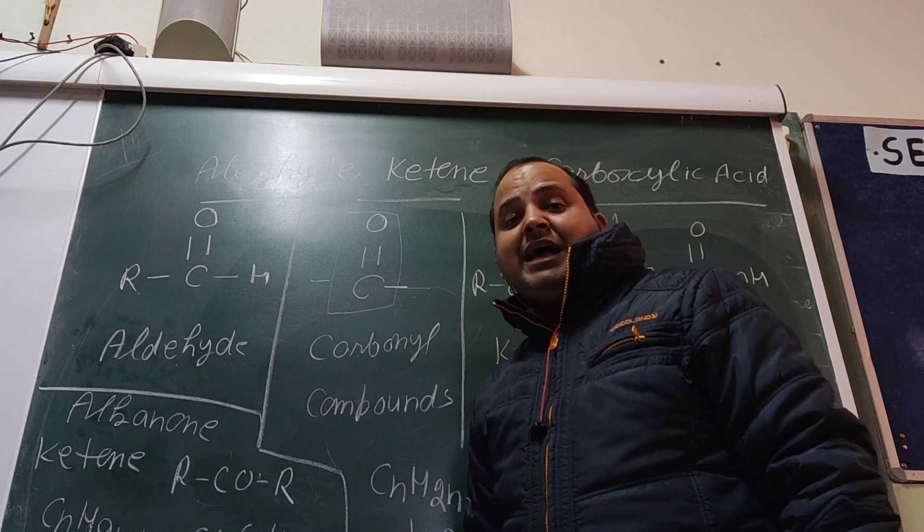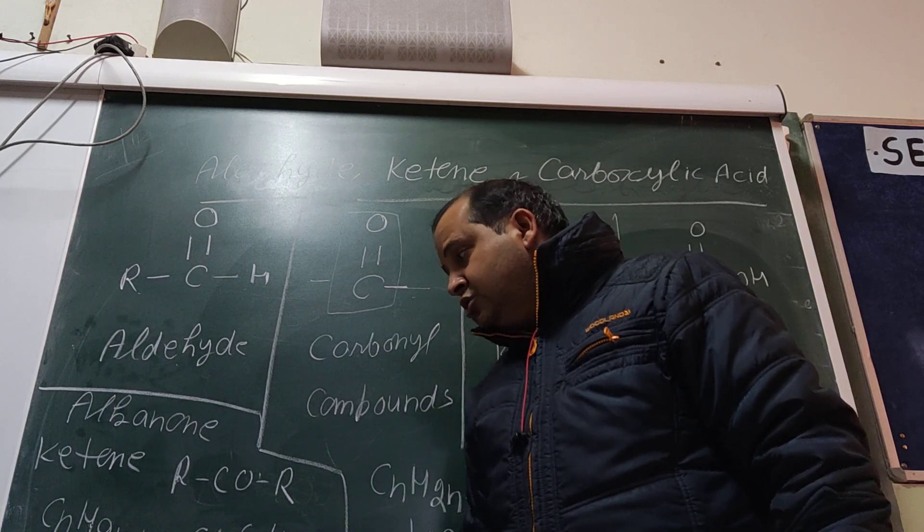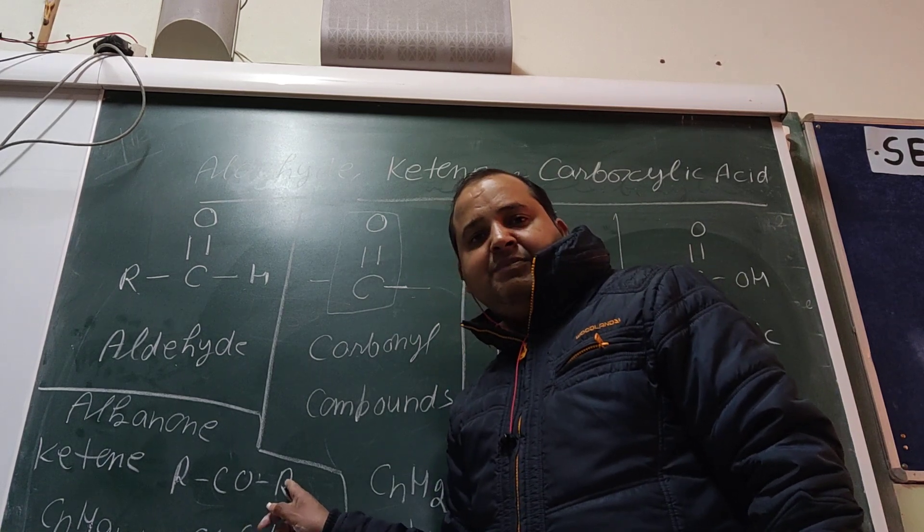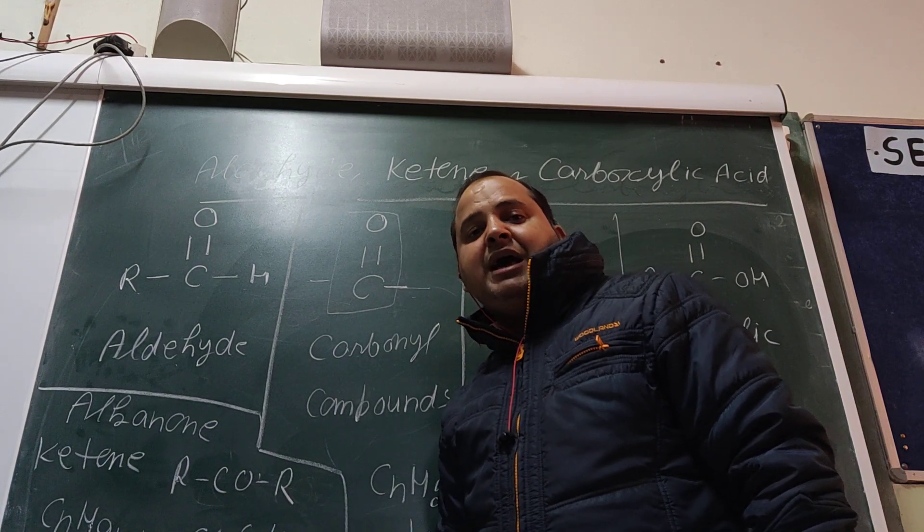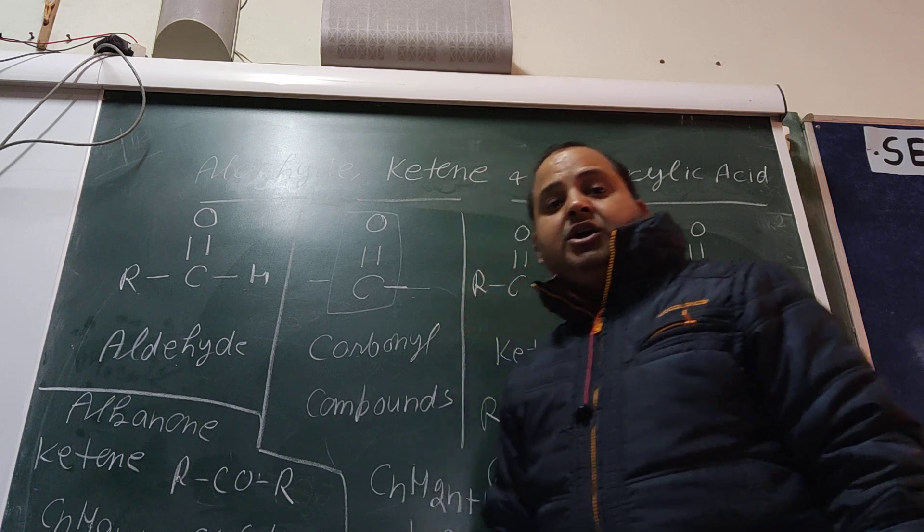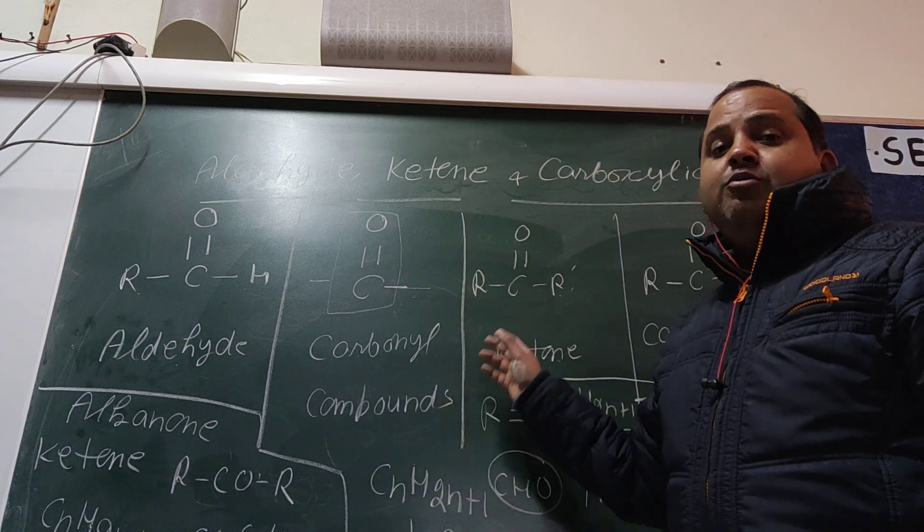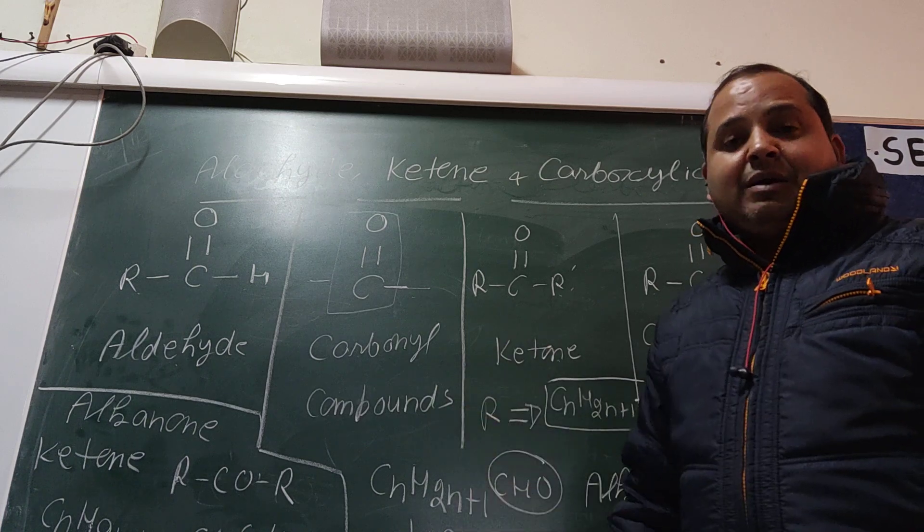The common name of propanone is acetone. Depending on this, if in place of R I take benzene, this becomes acetophenone. So this was all about nomenclature and introduction to aldehydes, ketones, and carboxylic acids.